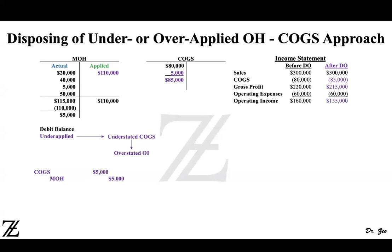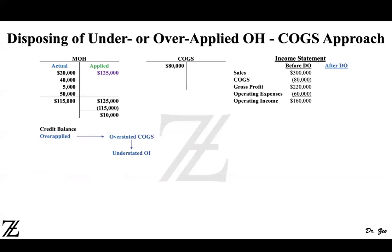Now I'll give you another example where you have overapplied overhead. In this case, you have applied $125,000 but actually incurred $115,000, which means you overapplied by $10,000 — $125,000 minus $115,000 equals $10,000. When you overapply, you have a credit balance in MOH, and you overstate cost of goods sold and understate operating income.